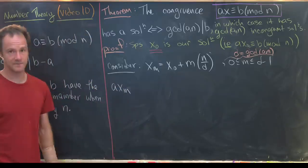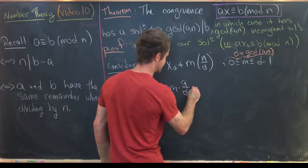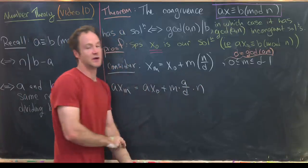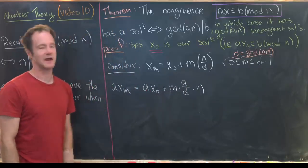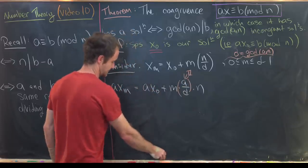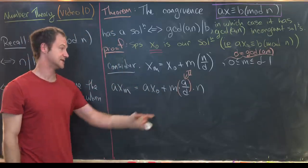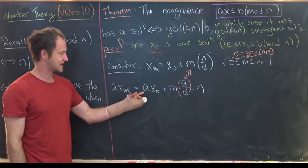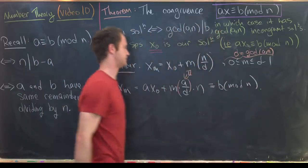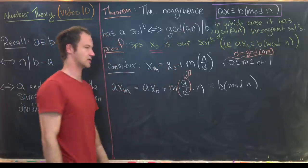To verify these are solutions, calculate axₘ = ax₀ + m·(a/d)·n. Note d divides a, so a/d is an integer. Reducing mod n, the second term vanishes as it's a multiple of n, leaving ax₀, which we assumed was congruent to b mod n. So each xₘ is indeed a solution to our original congruence.